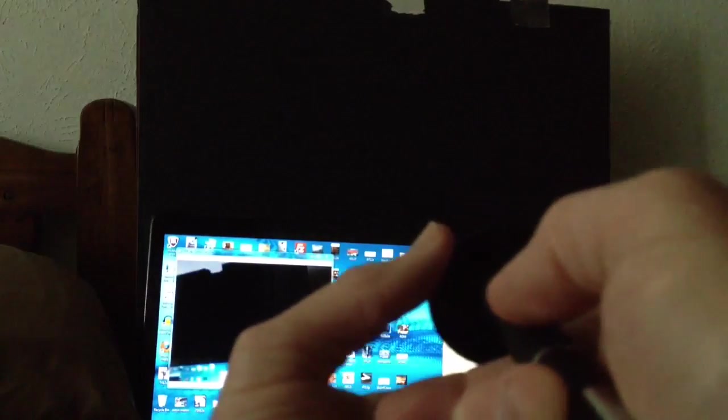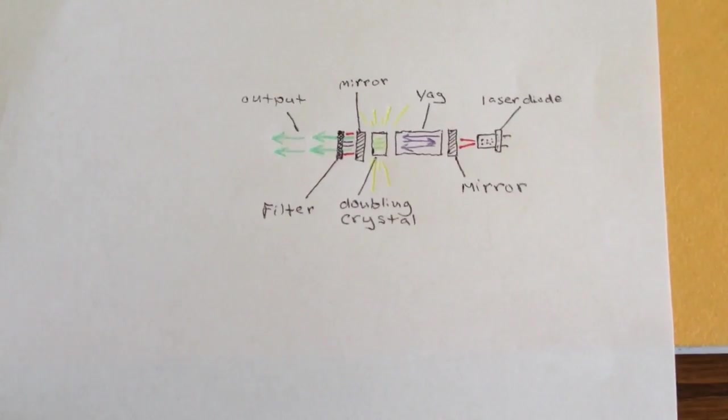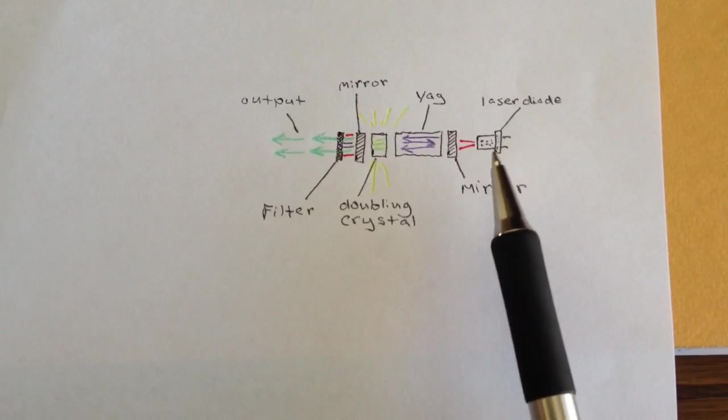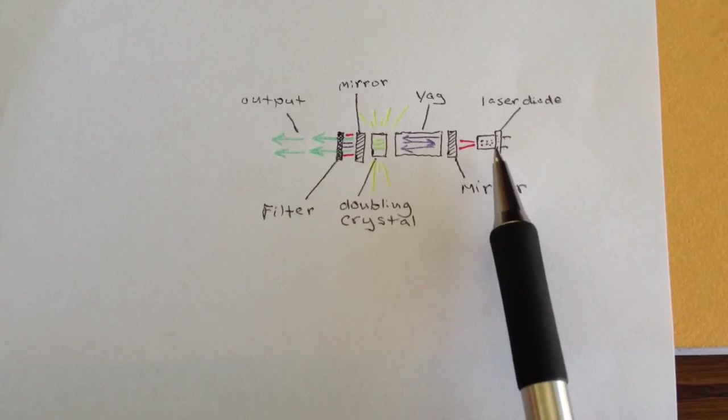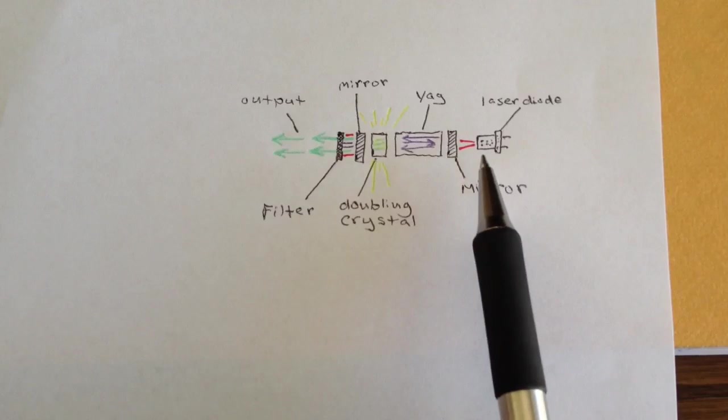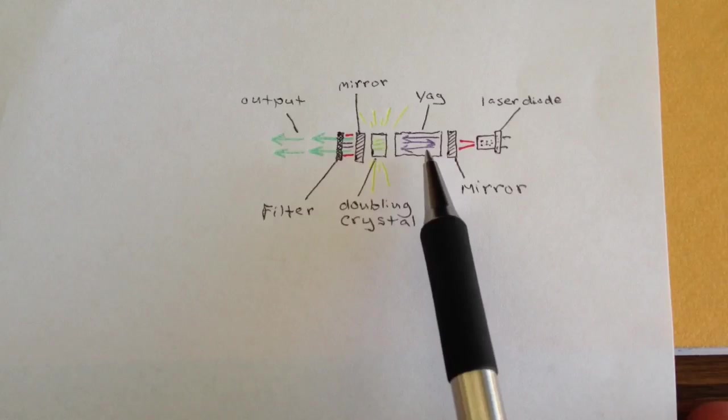So here is the typical green laser pointer. I drew a little diagram to illustrate it. And what you have is a laser diode here, a high power laser diode. And this laser diode generates an output in the invisible infrared at around 808 nanometers. That output is then used to pump a second laser. And the second laser here generates, it's a crystal, it generates an output at around 1064 nanometers in the infrared.